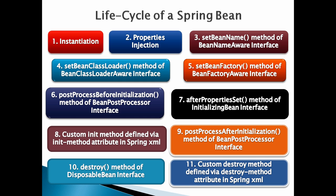Number 2: Properties Injection. After creation of the Bean instance, dependencies of that Bean will be injected through dependency injection. If the Bean class implements any of the below interfaces, then the corresponding method will be invoked.